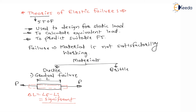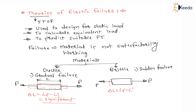For brittle material, there is very negligible deformation under applied load. Brittle material means sudden death — sudden failure, like a heart attack. The change in length is negligible. At some load, brittle materials suddenly develop a crack and break into two pieces. Such failure is called rupture or fracture.